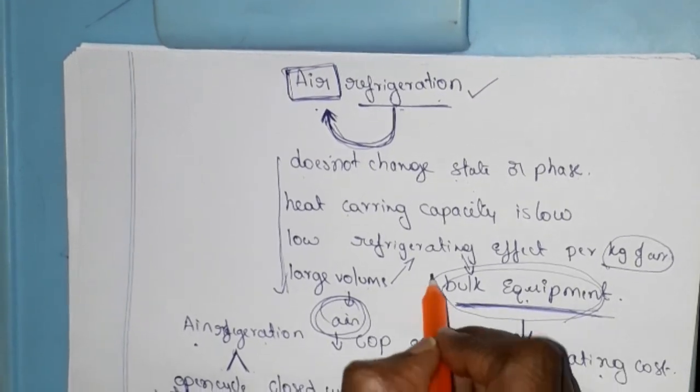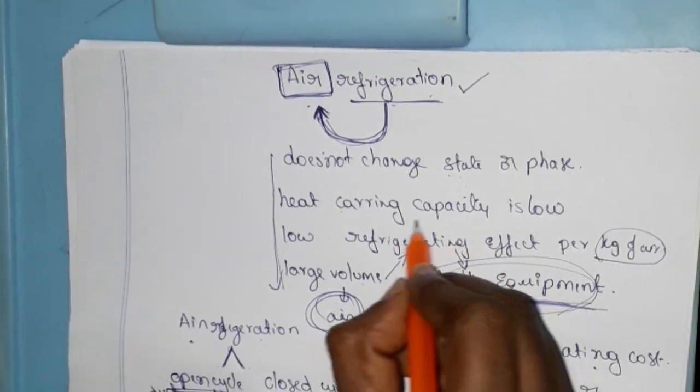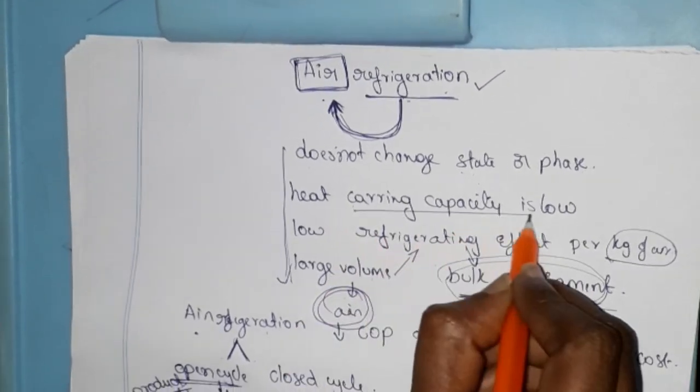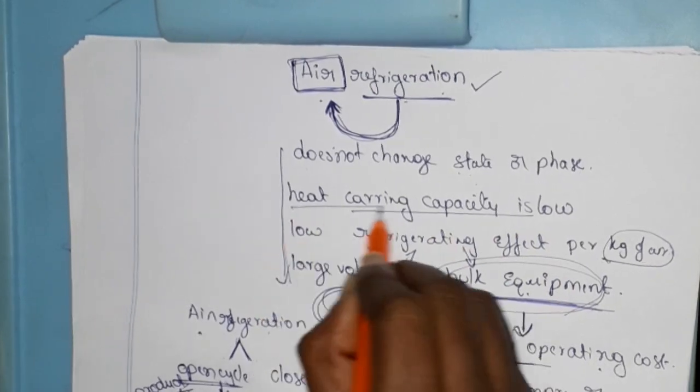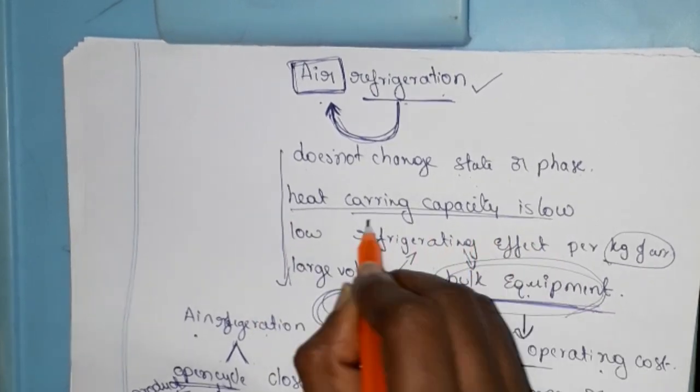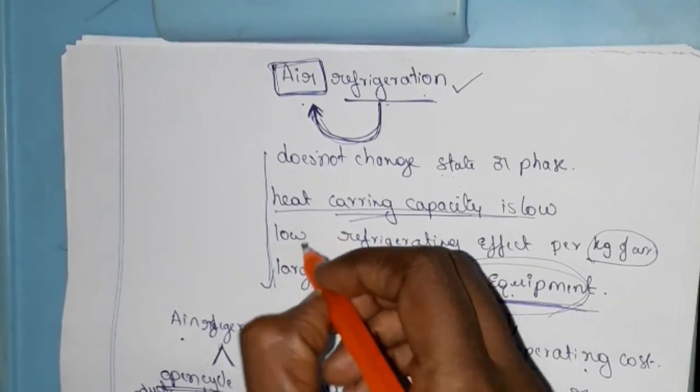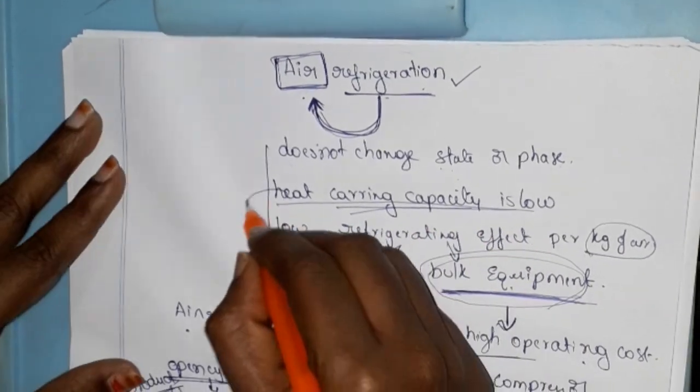So in summary, the disadvantages of air refrigeration are: low refrigerating effect, low heat carrying capacity, and low COP for the entire cycle.